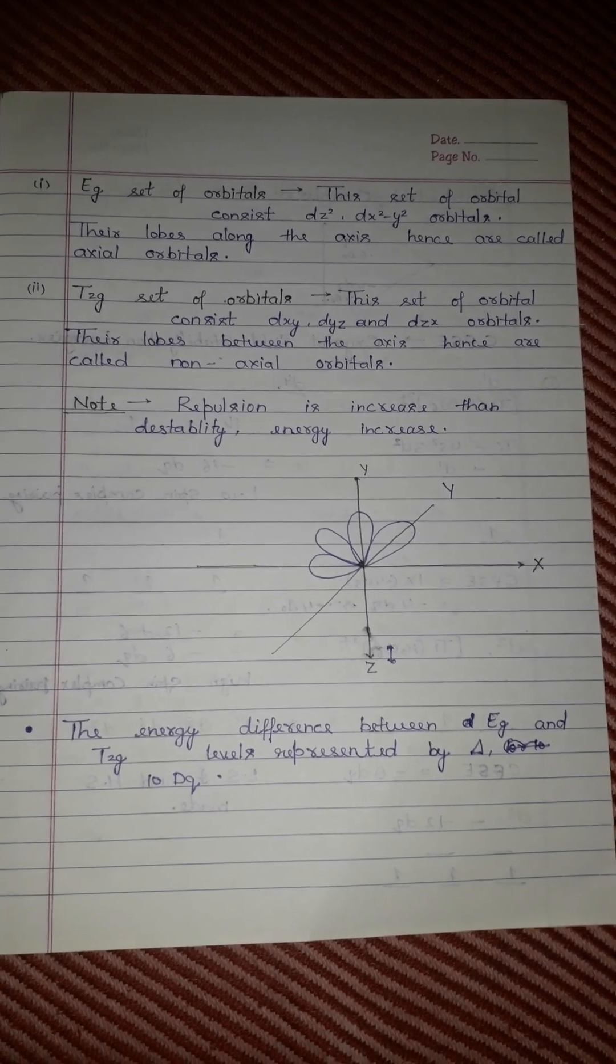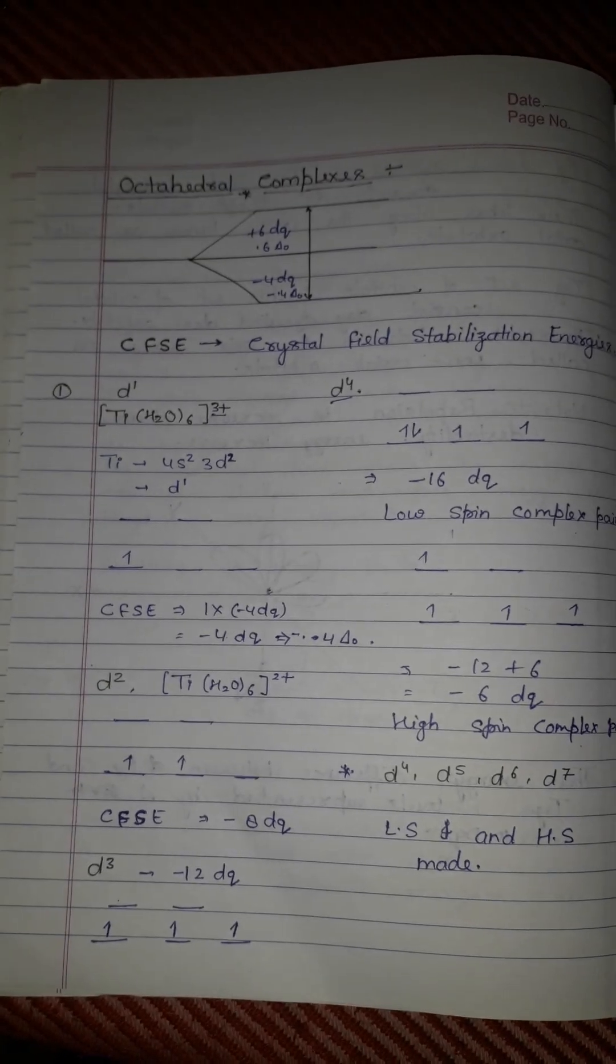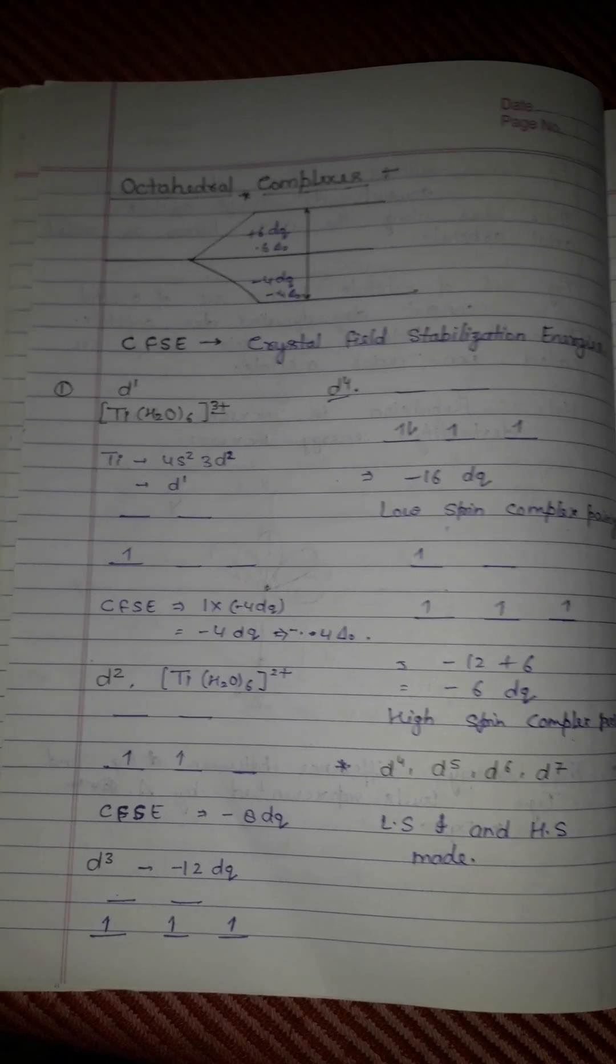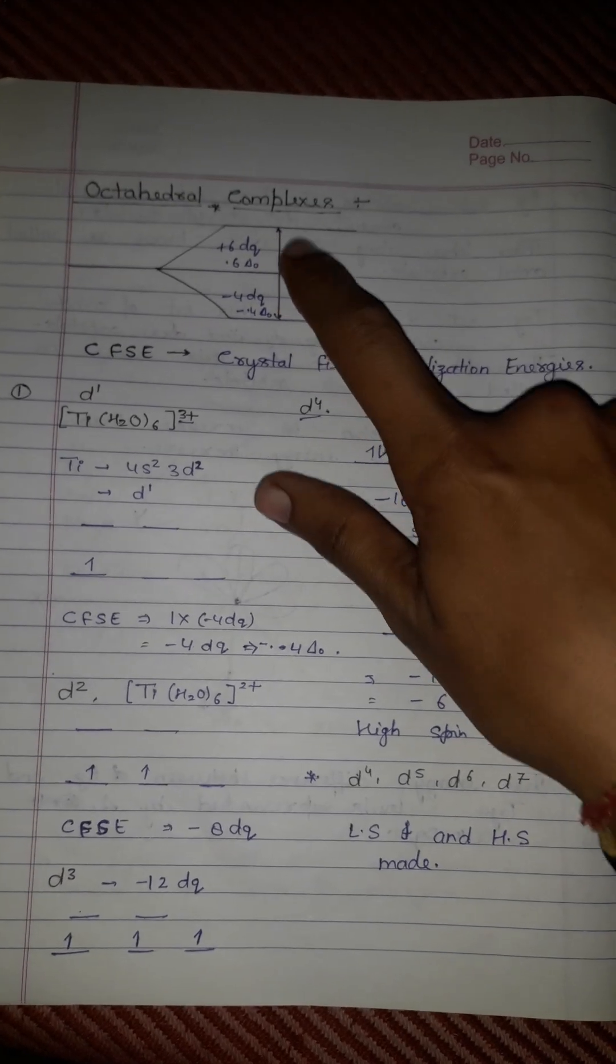Δ equals 10Dq in octahedral complexes. The eg orbitals are destabilized by +6Dq, while t2g orbitals are stabilized by -4Dq, maintaining the energy balance.